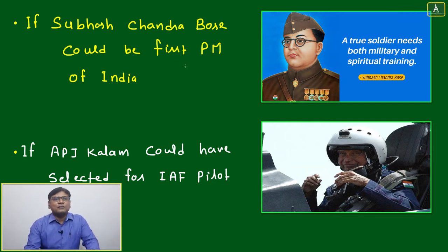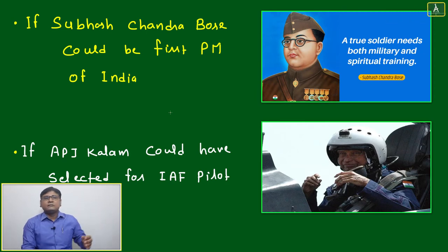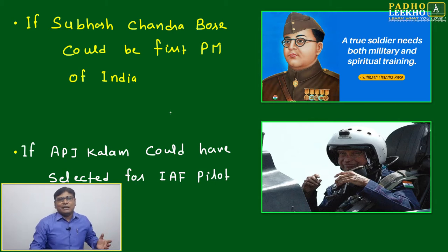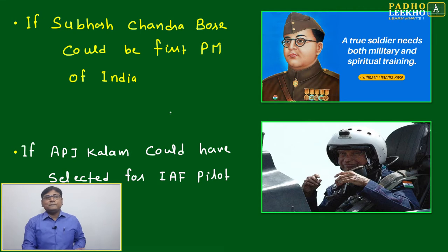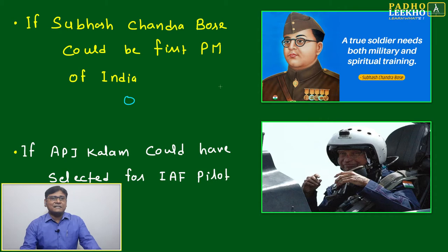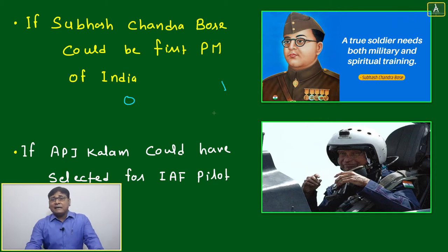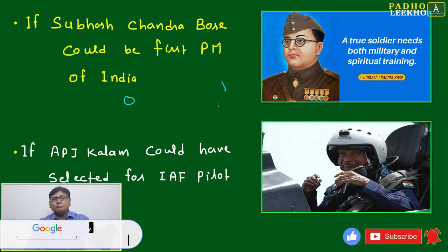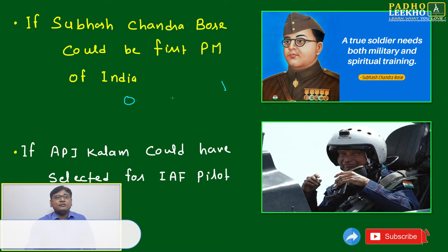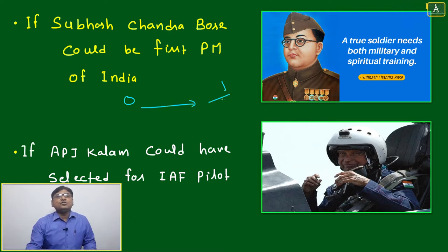If Subhash Chandra Bose could have been the first Prime Minister of India, we can think India could have been a superpower before 2000 — no hunger, no poverty, no corruption. Everything would be perfect. Maybe, may not be. It is always between zero to one. We can't say it is 100% sure, but it is also not impossible. It could be, it can be, or it will be — all possibilities are there, but actually life lives between zero to one.